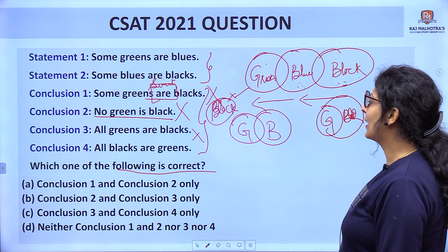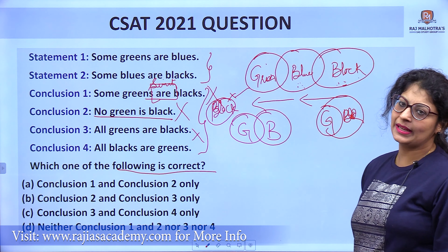Second conclusion: no green is black. For this to be true, I need a cross between green and black in the diagram — that cross is not visible, so it is false. Also remember: if all my statements are positive — positive means no 'no', no 'not' — then negative conclusions are automatically false. In this question, the statements are all positive, so seeing any negative conclusion, we can immediately mark it false.